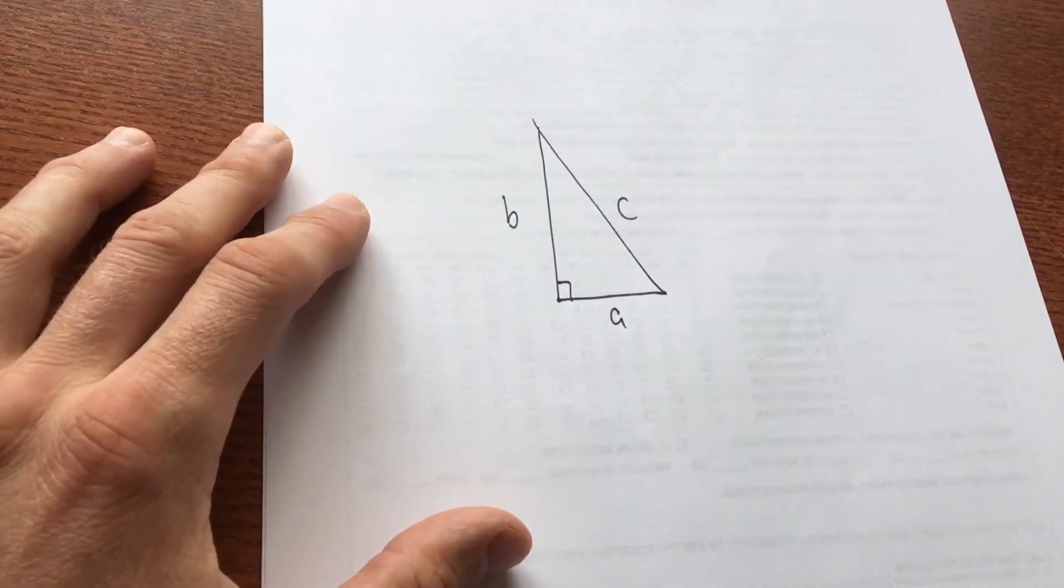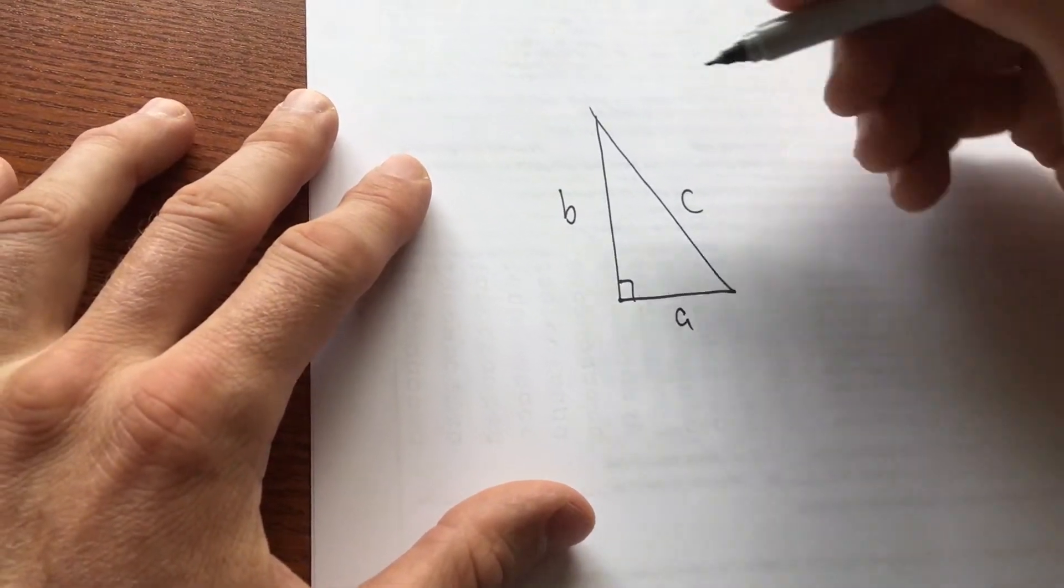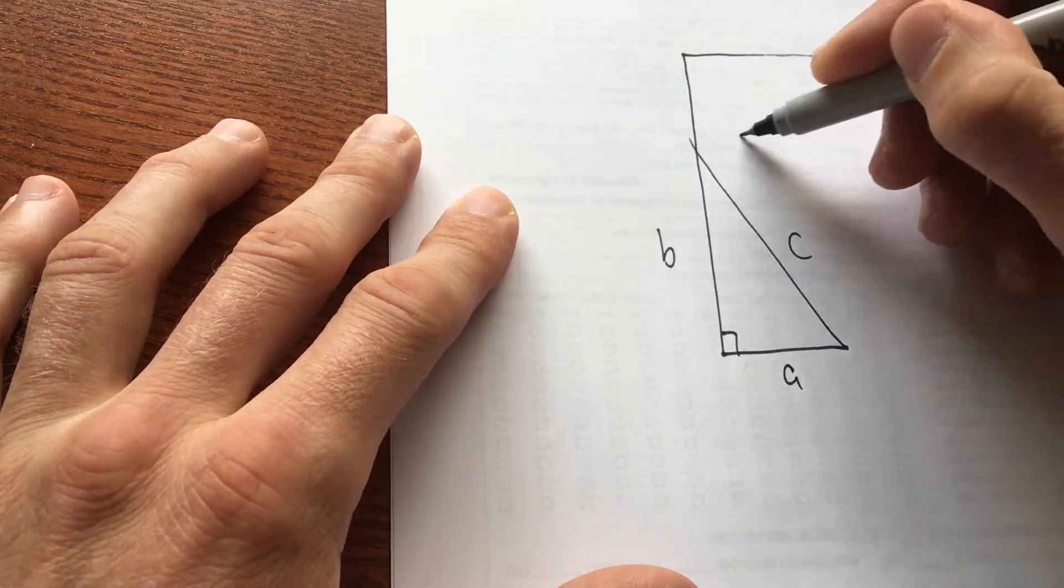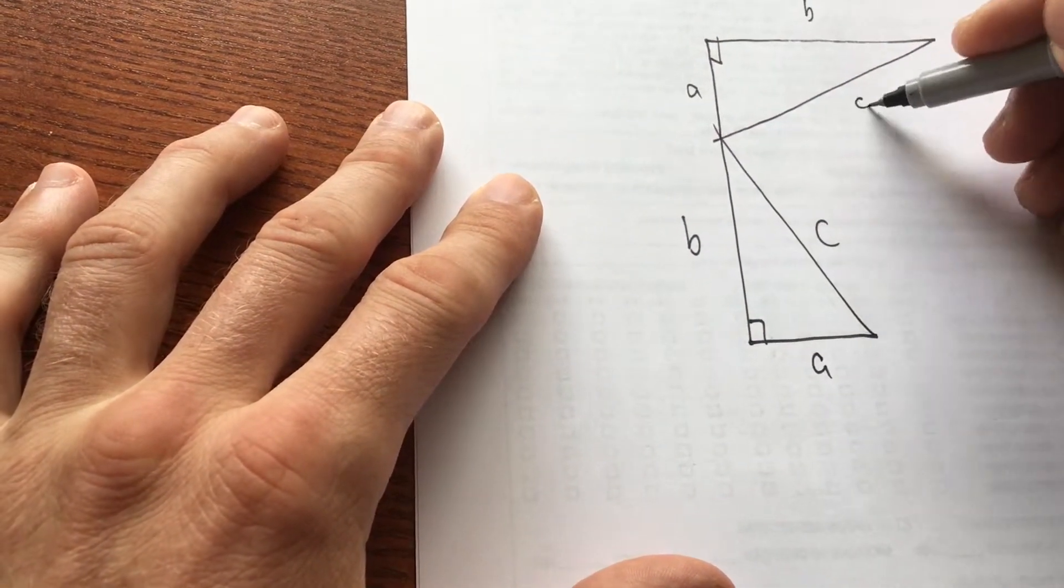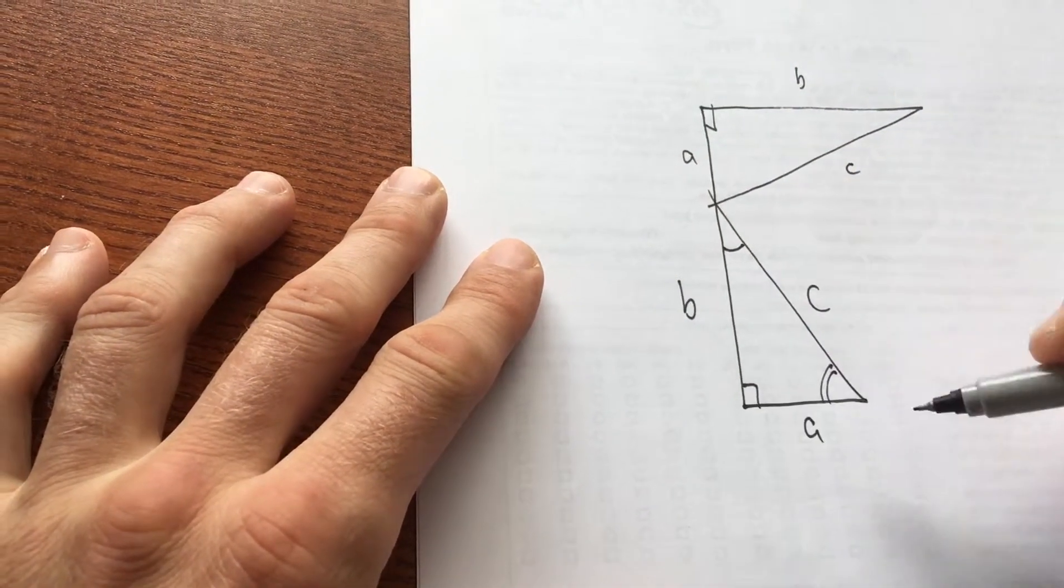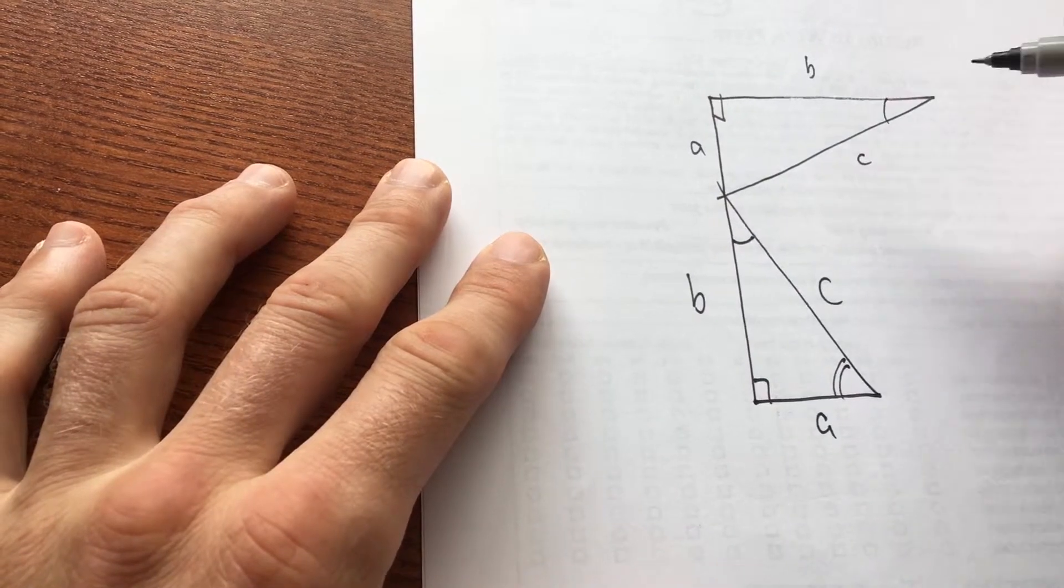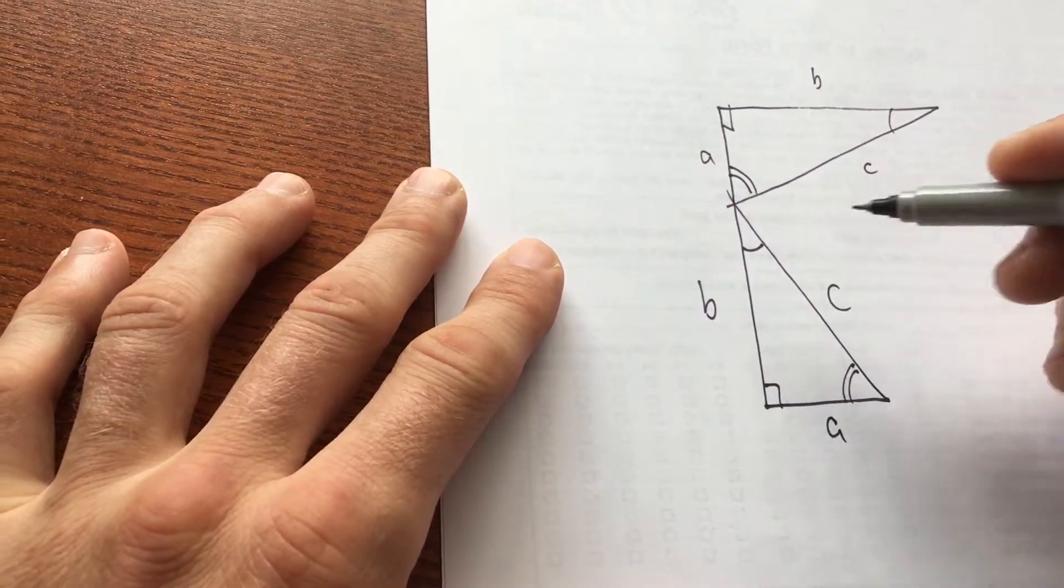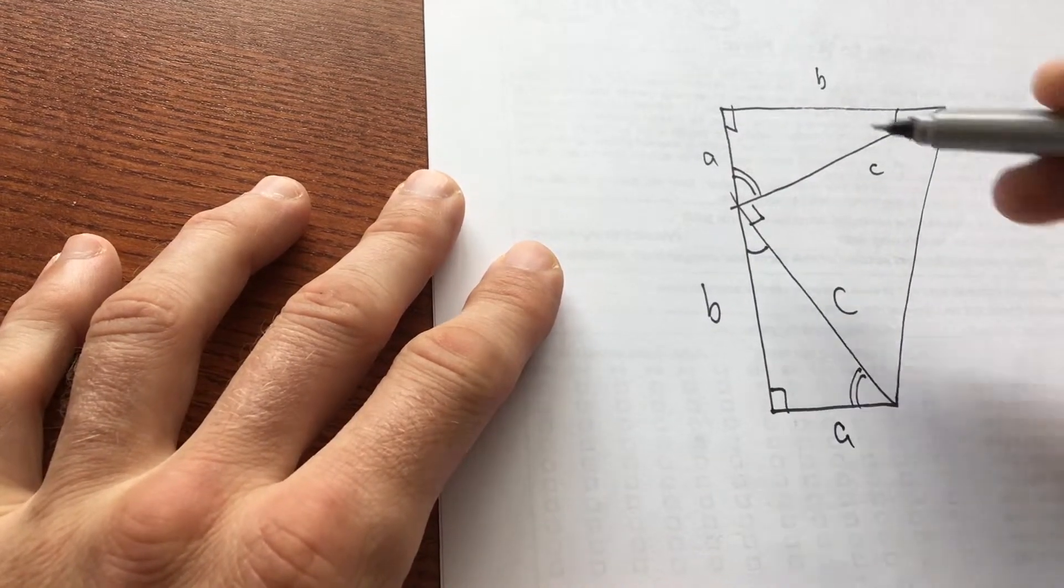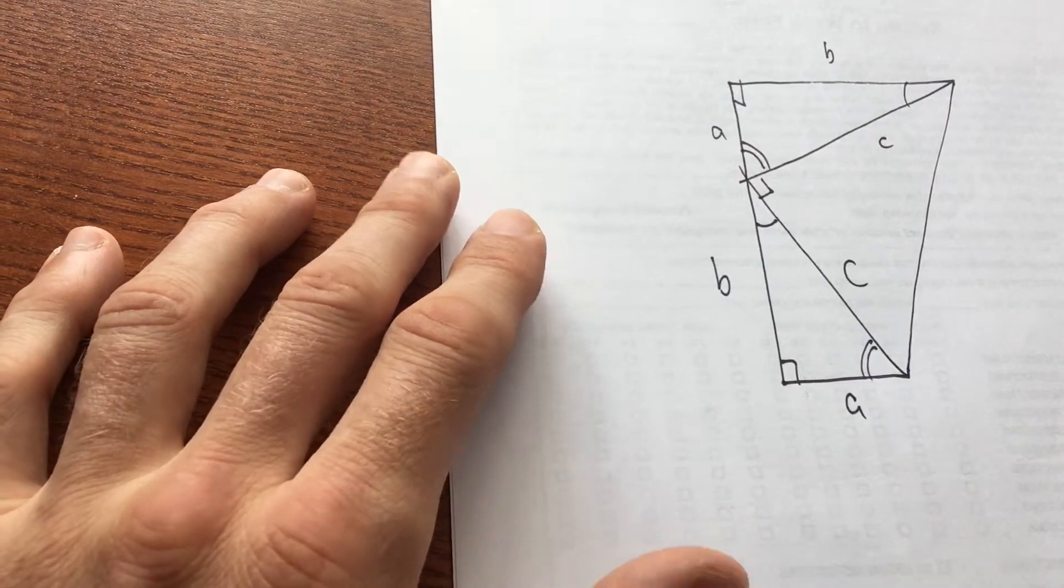So here is President Garfield's proof. He copies this same triangle here. Here's length a, here's length b, here's length c. We'll call this single slash, this double slash. So these are complementary. Here's the same triangle, single slash, double slash. So these are complementary. So this is a right angle. So he forms this trapezoid.